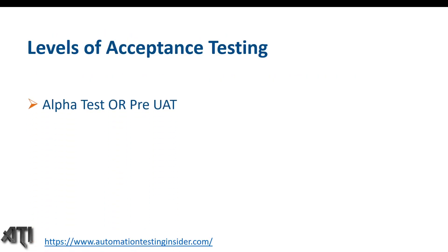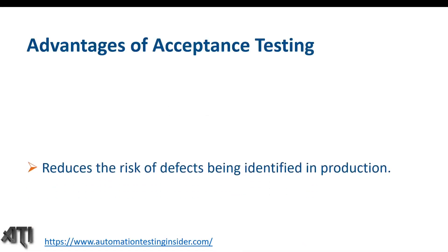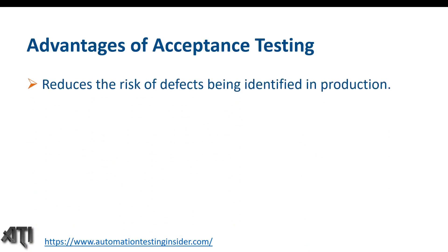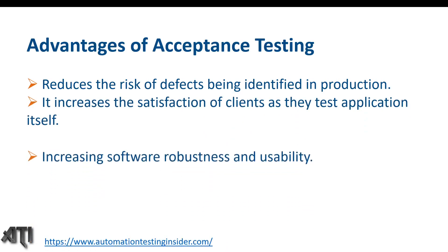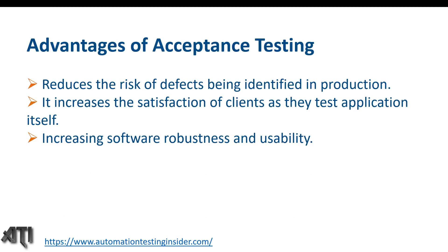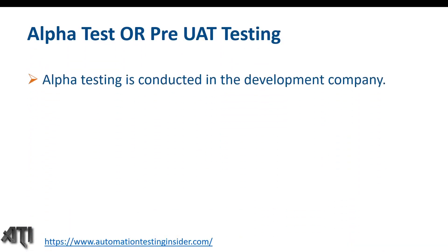There are two levels of acceptance testing: alpha testing (pre-UAT) and beta testing (post-UAT). The advantages of acceptance testing include: reducing the risk of defects being identified in production, increasing client satisfaction, improving software robustness and usability, and increasing end-user happiness.